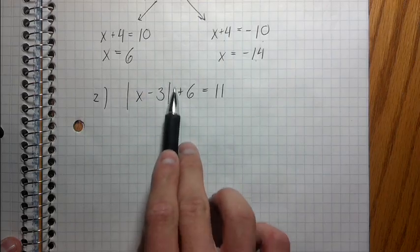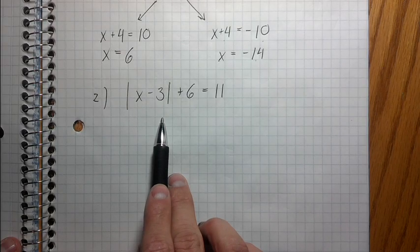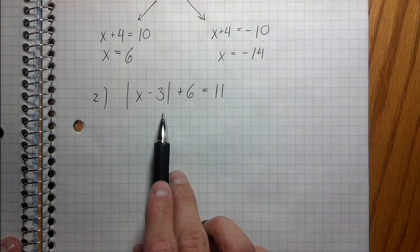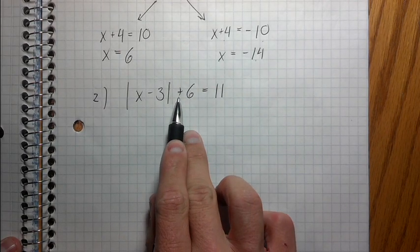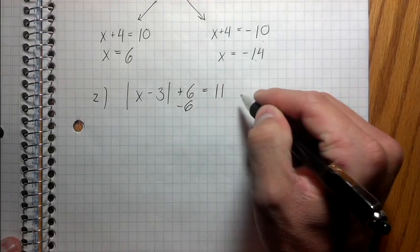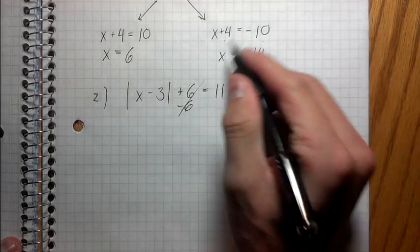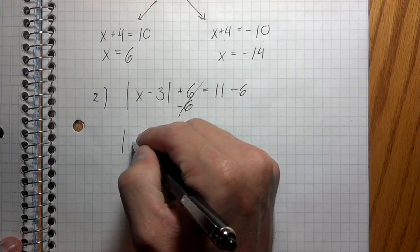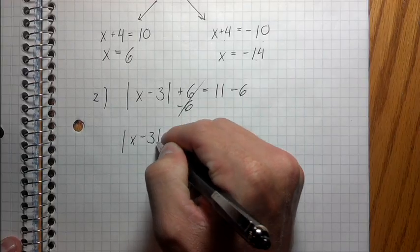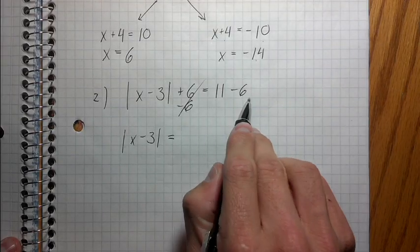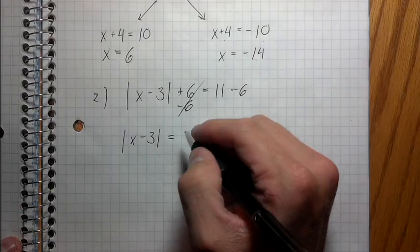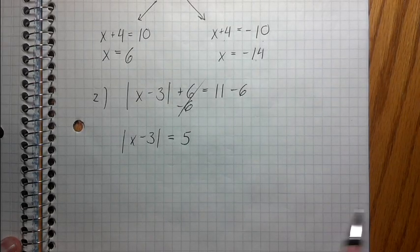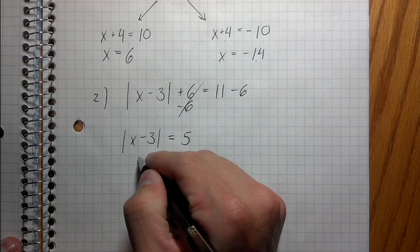So I'm going to subtract six from both sides. I'm going to go minus six, minus six, okay? It's going to go away. So I'm going to rewrite this equation, absolute value of x minus three equals 11 minus six is five. So now it's basically just like the first equation, right? Break it into two equations.